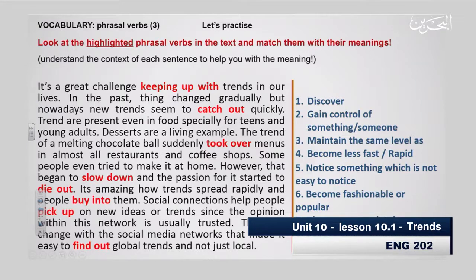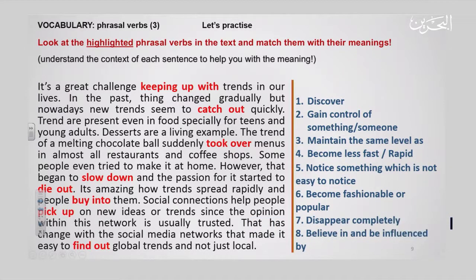So let us read the text together. It's a great challenge keeping up with trends in our lives. In the past, things changed gradually, but nowadays new trends seem to catch on quickly. Trends are prevalent especially in food, especially for teens and young adults. Desserts are a living example. The trend of a melting chocolate bowl suddenly took over menus in almost all restaurants and coffee shops. Some people even try to make it at home. However, that began to slow down and the passion for it started to die out. It's amazing how trends spread rapidly and people buy into them. Social connections help people pick up on new ideas or trends since the opinion within these networks is usually trusted. That has changed with social media networks, which made it easy to find out global trends and not just local.